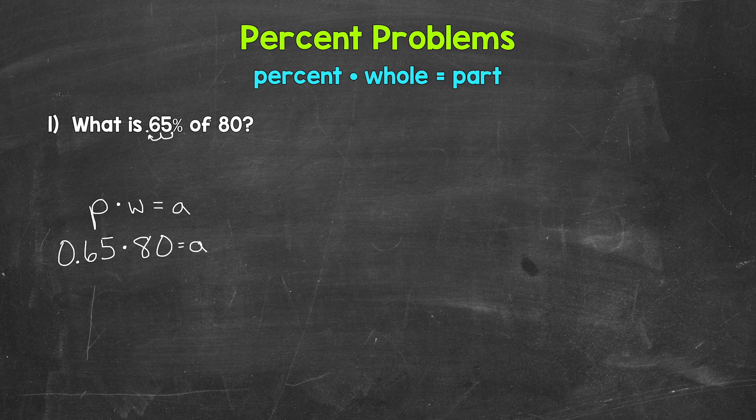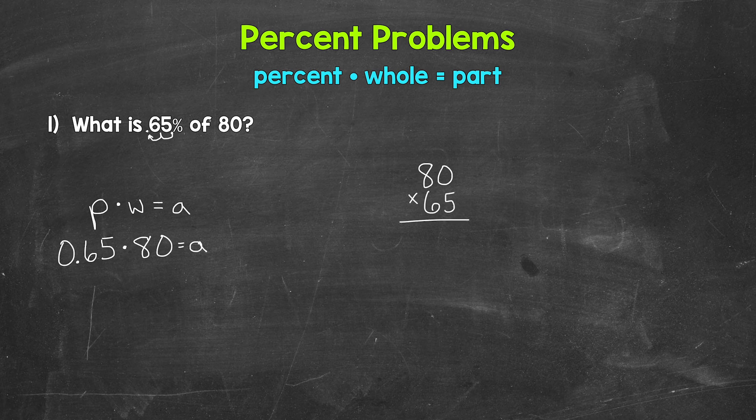Well, our variable A is already isolated on the right side of the equation. So all we need to do is multiply on the left side of the equation. So 65 hundredths times 80. Let's come to the side and multiply this by hand. And remember, when we multiply decimals, we can actually start by taking out any decimals. Then we multiply and then place the decimal in our answer at the end. So we can just do 65 times 80. But I'm actually going to set this up as 80 times 65. I like putting the greater number on top when multiplying.